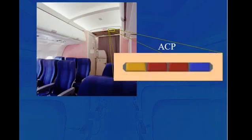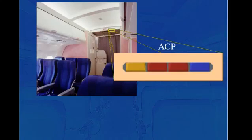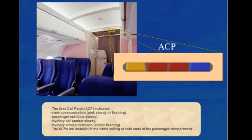The Area Call Panel, ACP, indicates Crew Communication in pink steady or flashing, Passenger Call in blue steady, Lavatory Call in amber steady, and Lavatory Smoke Detection in amber flashing. The ACPs are installed in the cabin ceiling at both ends of the passenger compartment.